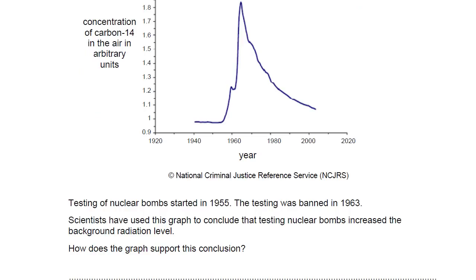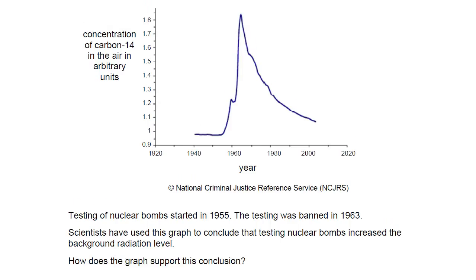Testing of nuclear bombs started in 1955, and testing was banned in 1963. Scientists have used this graph to conclude that the nuclear testing of nuclear bombs increased the background radiation level. How does the graph support this conclusion? Carbon-14 in the air is going to give off radiation, and therefore this graph tells us something about the background radiation.